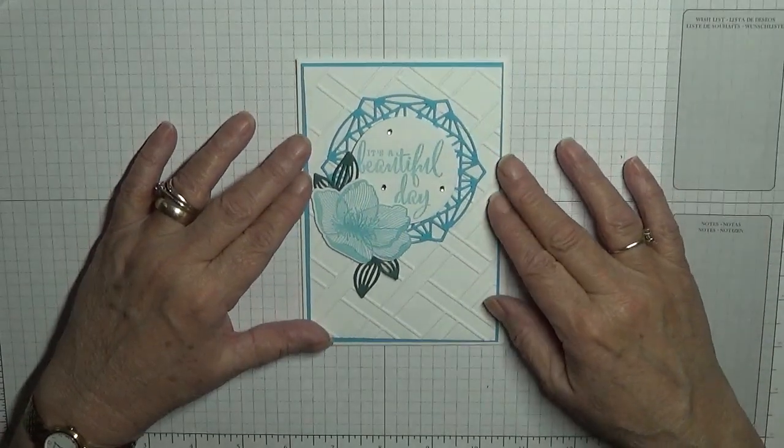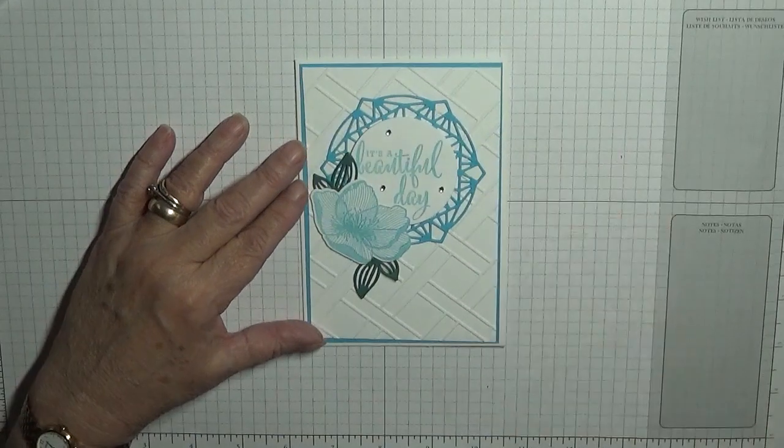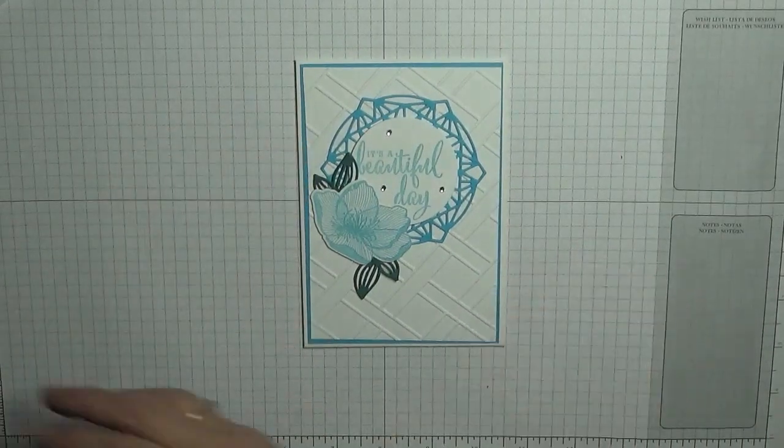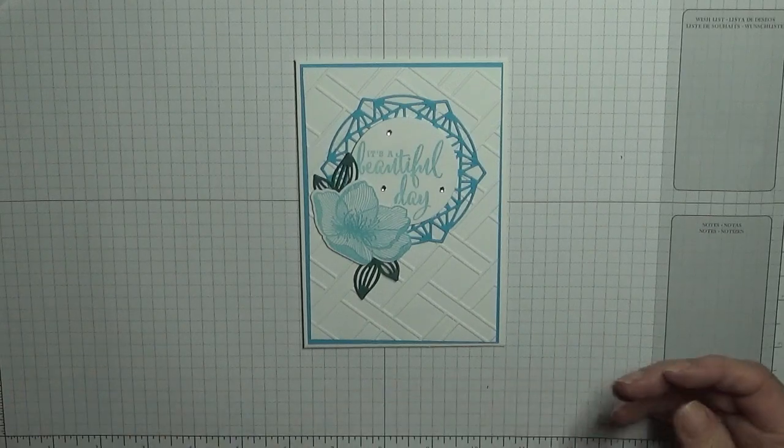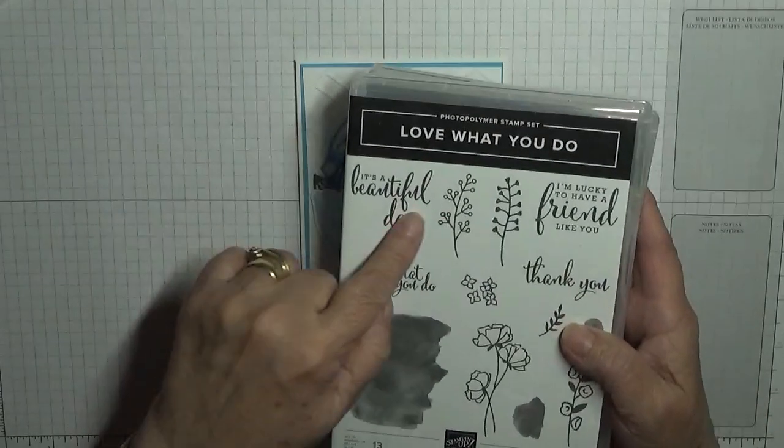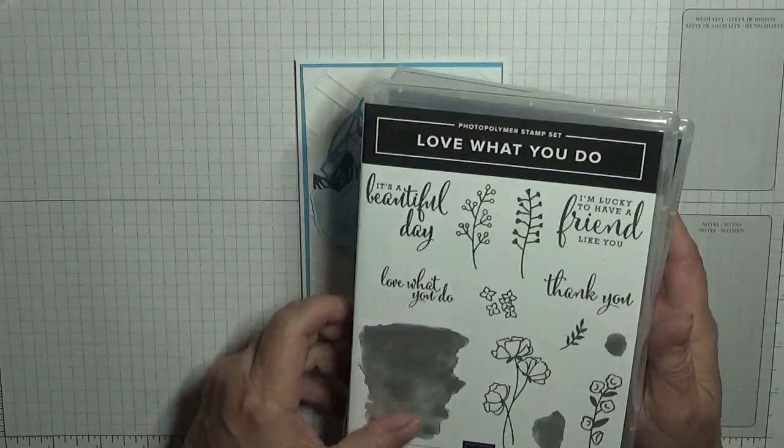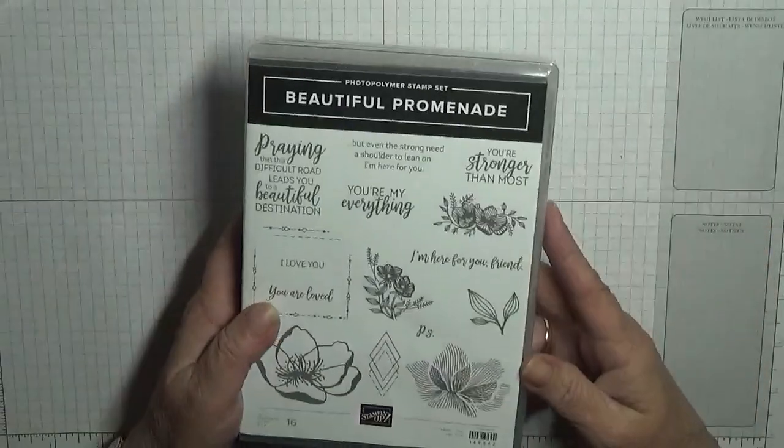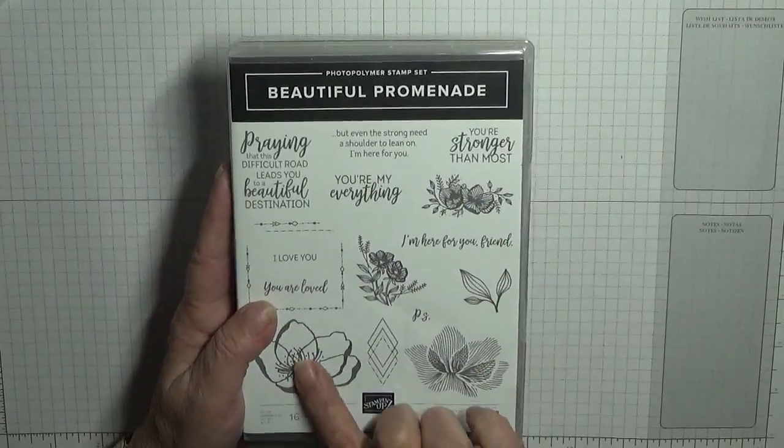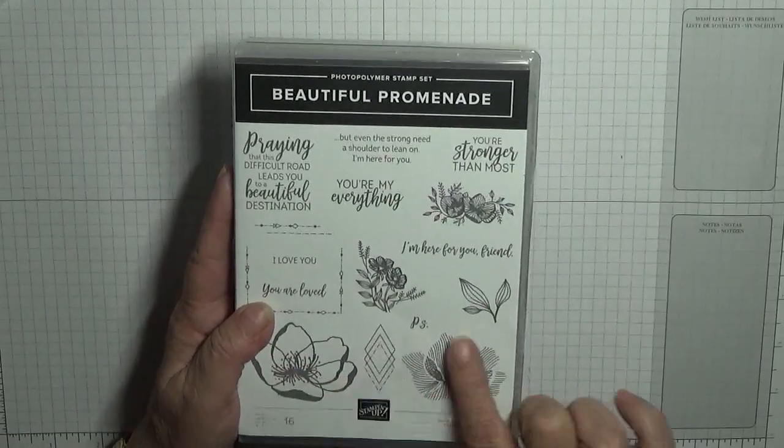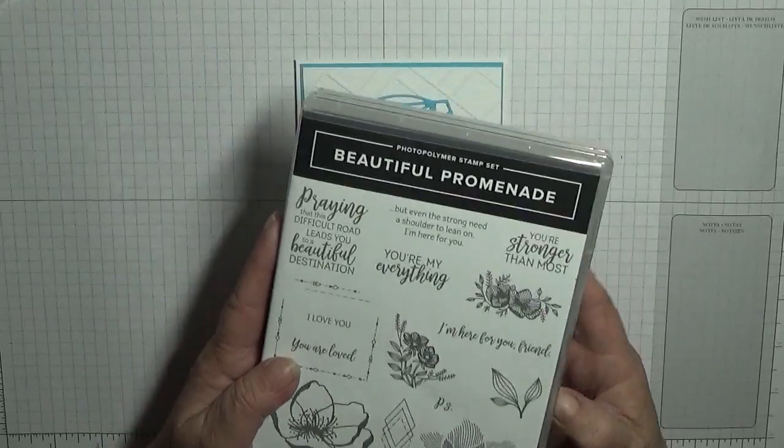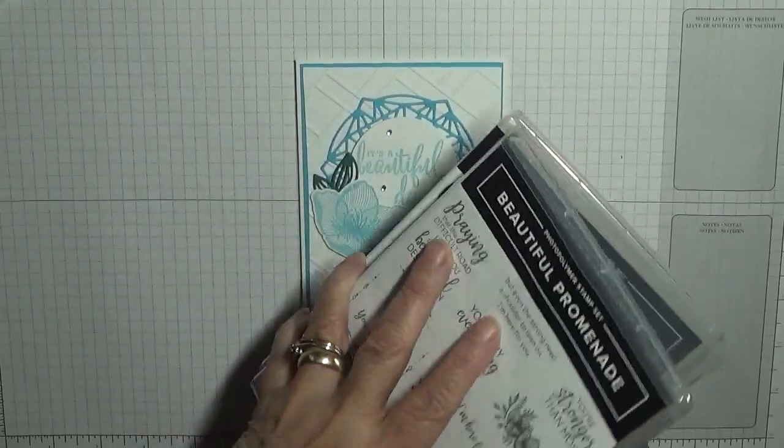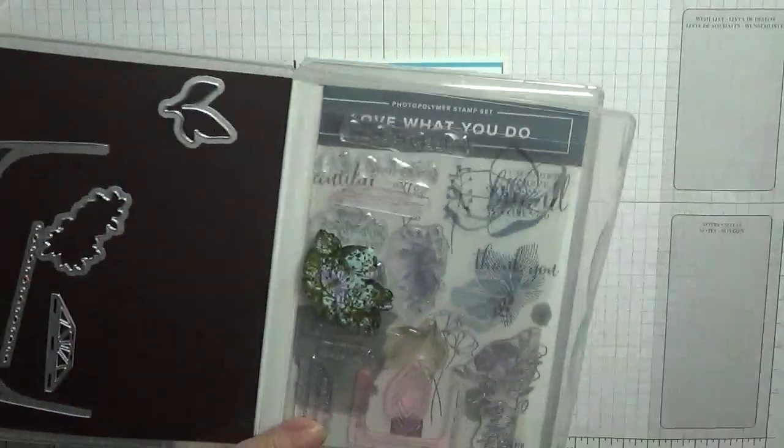Hello Georgie Burns here, today I'd like to show you how I made this card. To make this card I use the stamp sets Love What You Do for the sentiment, It's a Beautiful Day and Beautiful Promenade, and we're going to use the flowers. It's a two-step stamping.